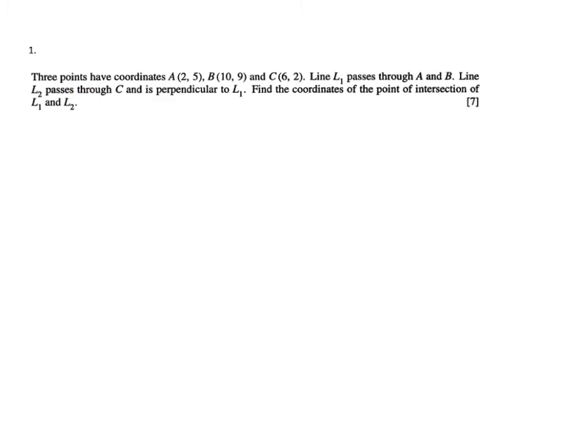So what is it saying? It says three points have coordinates A(2,5), B(10,9), and C(6,2). Line L1 passes through A and B. Line L2 passes through C and is perpendicular to L1. Find the coordinates of the point of intersection of line 1 and line 2.